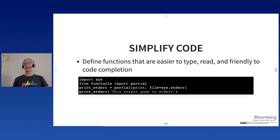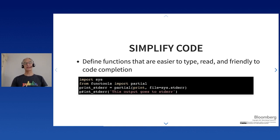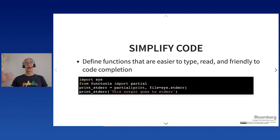You can also use partial to simplify code and define functions that are easier to type, read, and friendly to code completion. For example, defining print_standard_error using the built-in print with output set to stderr. Now you can use print_standard_error with code completion support, rather than typing print(file=sys.stderr) every time.